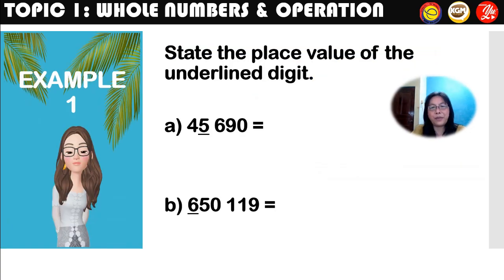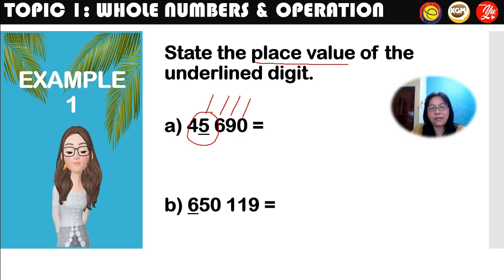Let's look at Example 1: state the place value of the underlined digit. The underlined digit is 5. Looking from right to left: 0 is ones, 9 is tens, 6 is hundreds, 5 is thousands. So the answer is thousands.